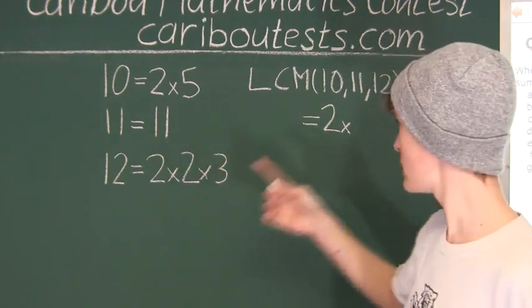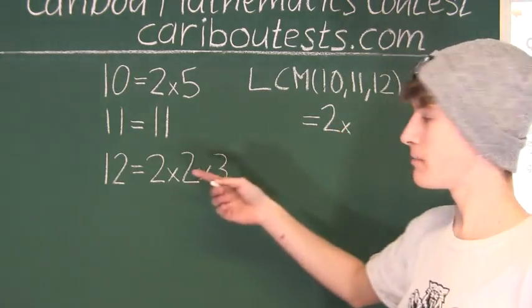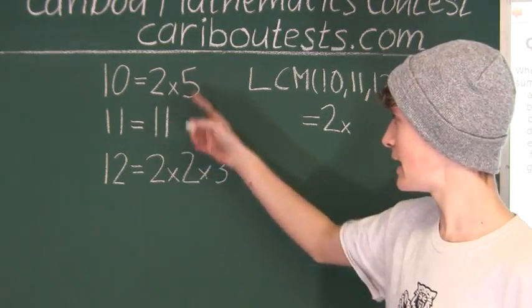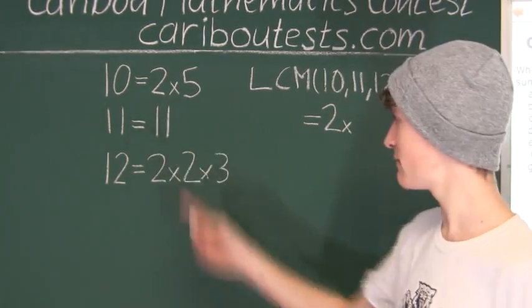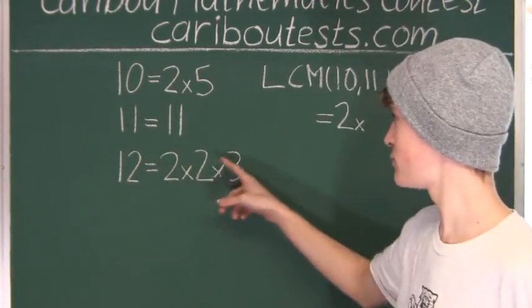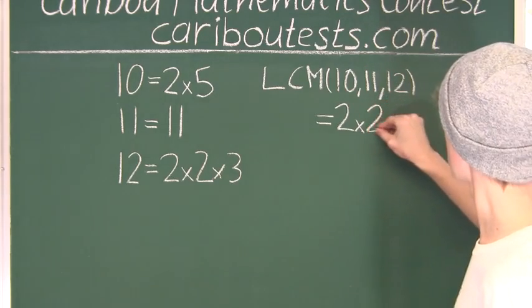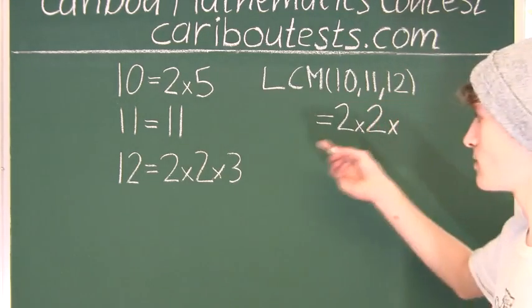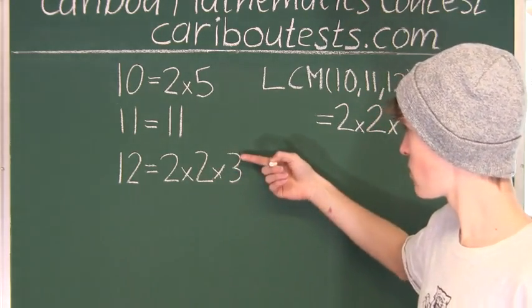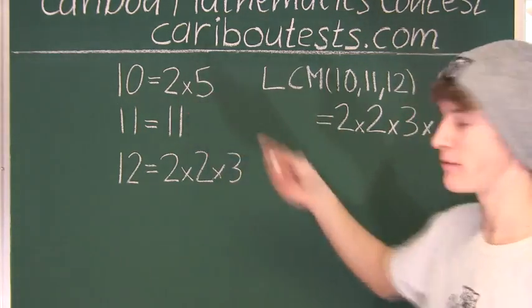Now, to know the number of 2s that we need, we find the maximum number of 2s in any of these three prime factorizations, which is in 12 because we have two 2s. So we need 2 times 2, and then the next biggest prime factor is 3, and then we have 5 and then 11.